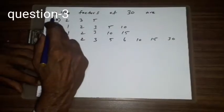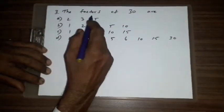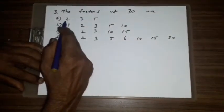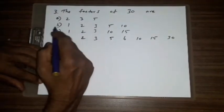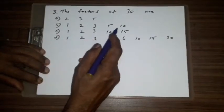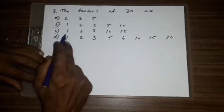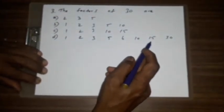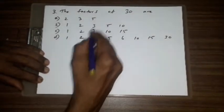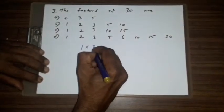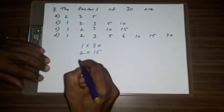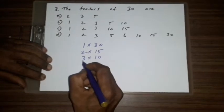Question number three: the factors of 30 are A) 2, 3, 5, B) 1, 2, 3, 5, 10, C) 1, 2, 3, 10, 15, D) 1, 2, 3, 5, 6, 10, 15, 30. So 1 x 30, 2 x 15, 3 x 10, 5 x 6.